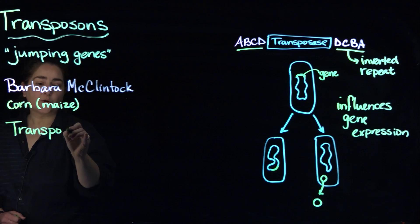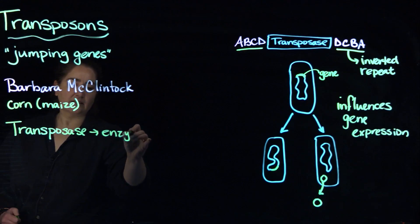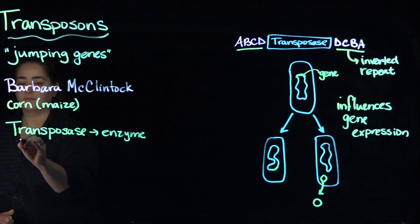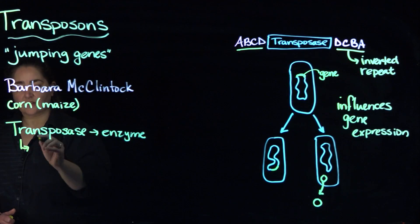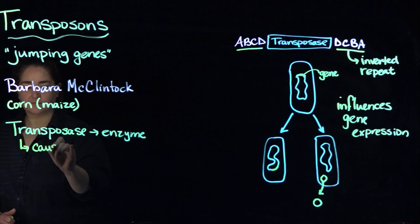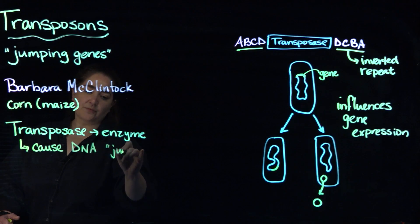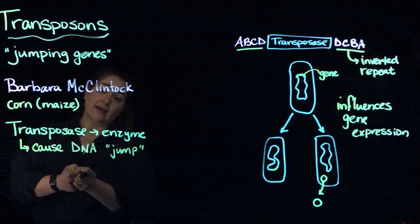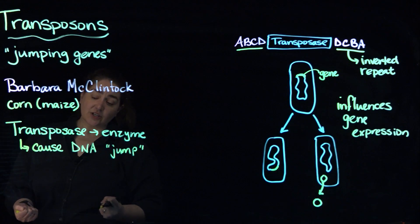Let's spell that right. Transposase. That transposase enzyme is going to cause the DNA to jump. So what happens is it's an enzyme that will essentially cut the DNA and remove a bit of gene, and then it puts it in somewhere else in the genome.